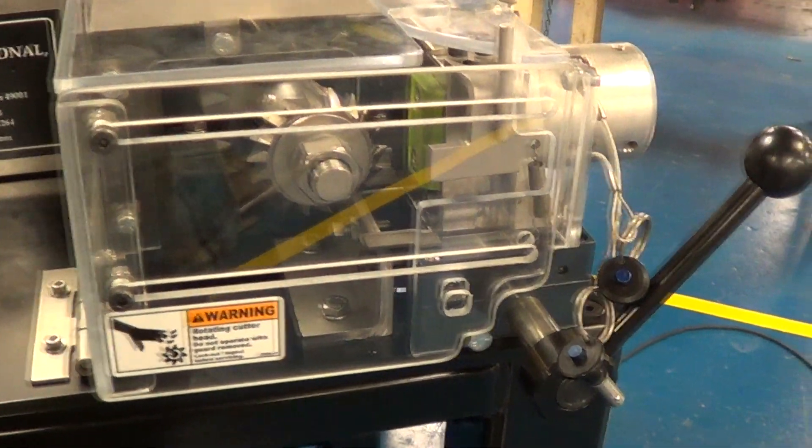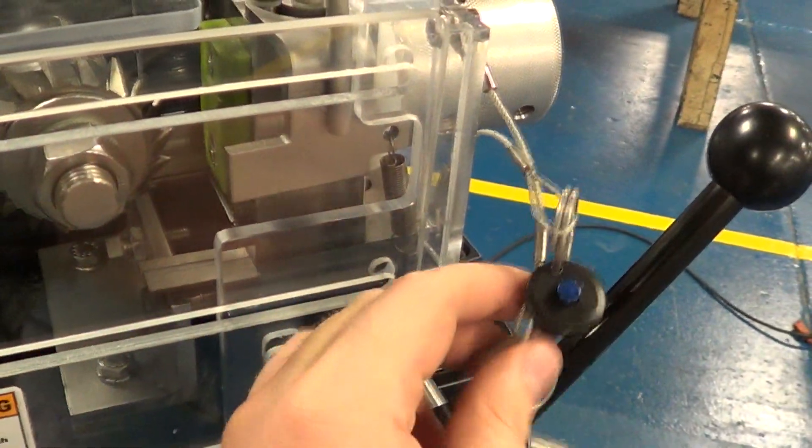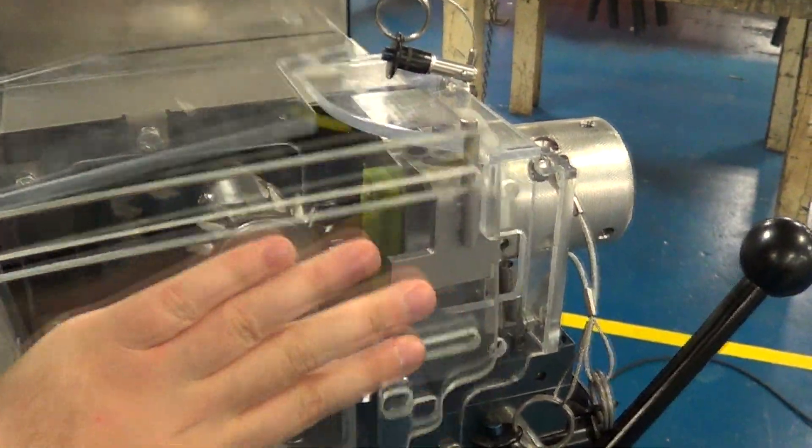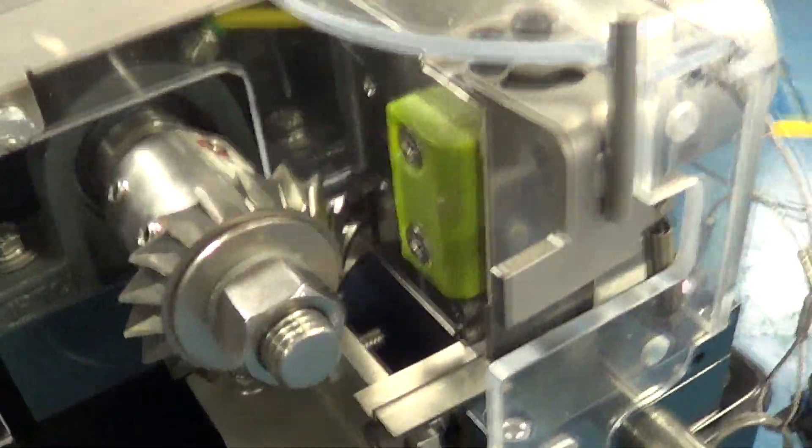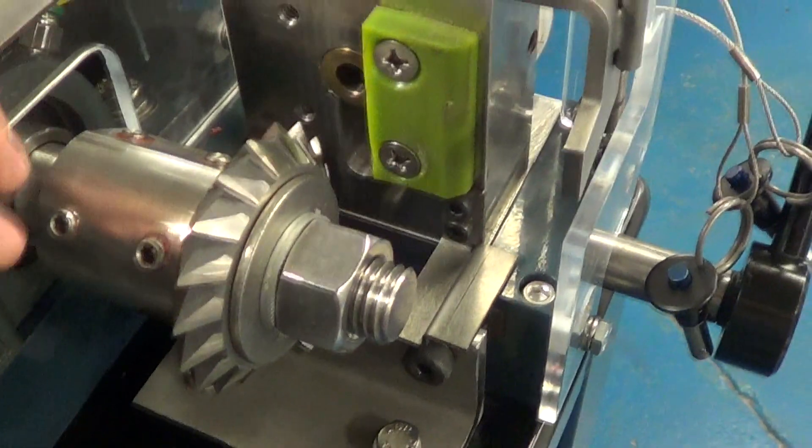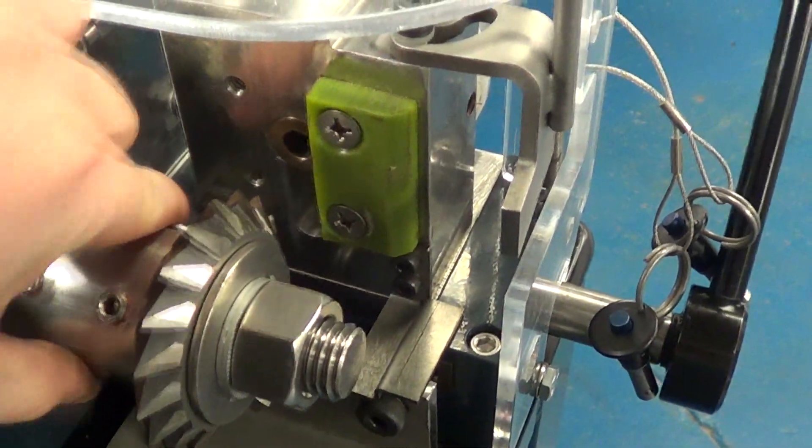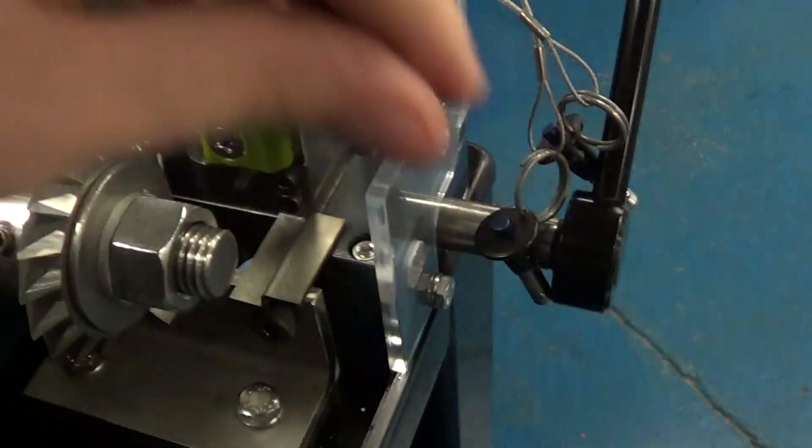To exchange the cutter, I've already taken out these quick-release pins, but there are two methods of doing it. You can either pull this all the way back to get in here, and to change the cutter, you just need to put a wrench here, wrench here, and you can pull it off.